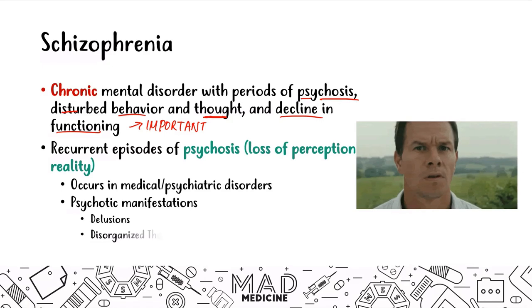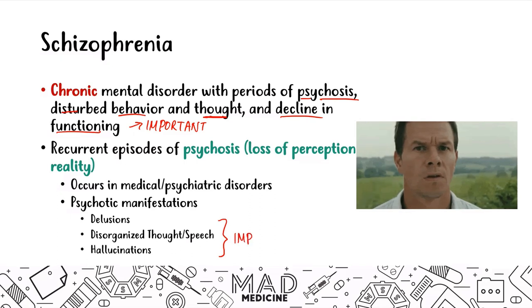Psychosis has three main manifestations: delusions, disorganized thought or speech, and hallucinations. These three things are very important because they're pretty much the hallmark characterization of schizophrenia.